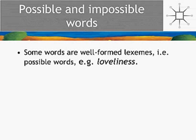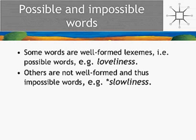It may also be an existing word, but whether it's possible or not has to do with whether it meets the rules of word formation. In this case, it does. There are other words that are not well-formed and therefore impossible. Here's an example of a word that just isn't a possible English word, and it's an interesting question — why not? Loveliness is fine, but why isn't 'slowness' okay?